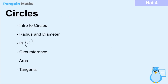Hi everyone and welcome back to another National Form Maths lesson where today we'll be talking about circles. We'll be going over a brief introduction of what a circle is, the importance of radius and diameter in measuring circles, we'll discuss the concept of pi and how we can use this symbol to calculate things like the circumference and the area of the circle, and finally we'll have a look at tangents and how these lines are important to circles also.